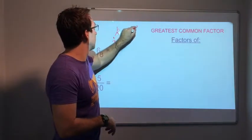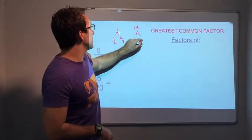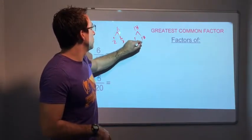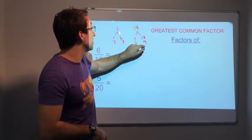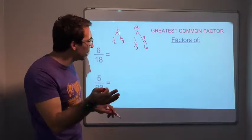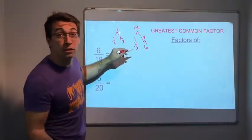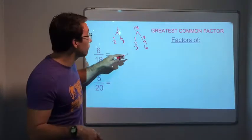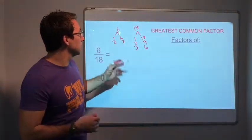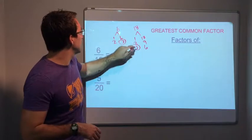18. 1 times 18. 2 times 9. 3 times 6. 4 times 4 is 16. 4 times 5 is 20. So it's not 4 or 5. And 6 is not. 3. It's our GCF.